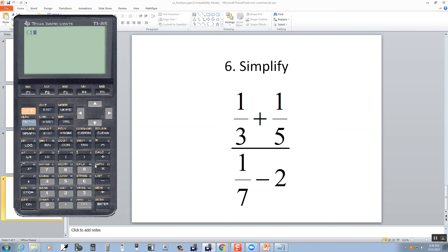So I'll do a beginning parentheses, 1 divided by 3, plus 1 divided by 5. Closing parentheses, divided by, beginning parentheses, 1 divided by 7, minus 2, closing parentheses, and then enter.